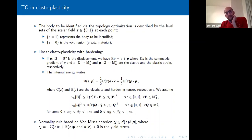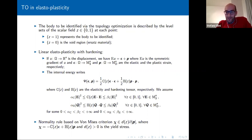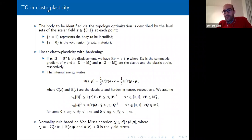Usually in elastoplasticity you would see an evolution problem with p-dot. Here we start from an equilibrium problem — from a physical point of view it has no real meaning, but it is meaningful mathematically. When you discretize in time, at every time step you solve an equilibrium problem. To understand how topology optimization in elastoplasticity works, it is useful to start from this equilibrium or time-incremental problem.